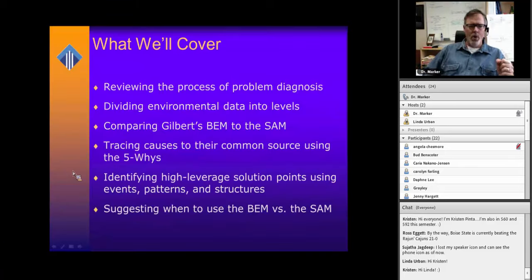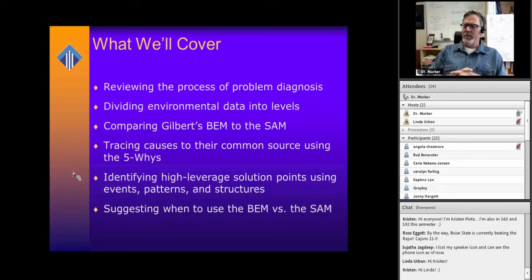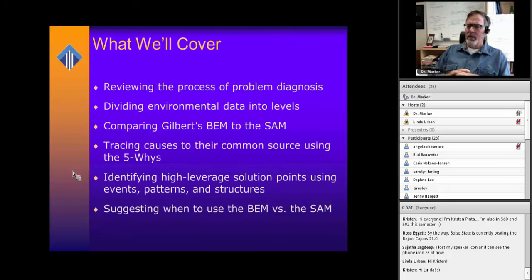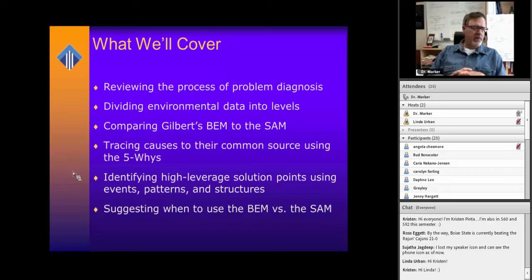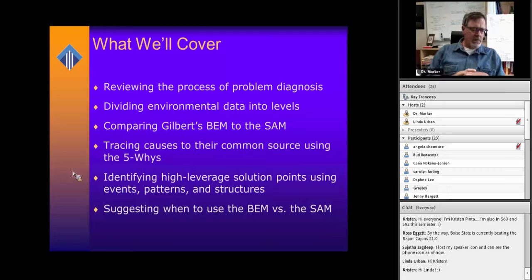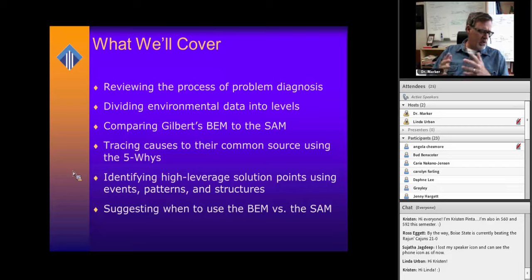Here are the things I'm hoping we'll cover today. We're going to review the process of problem diagnosis in general — this will be a review for almost all of you. We'll talk about dividing the environmental data into levels, then comparing Gilbert's BEM to the Synchronized Analysis Model, the SAM. After that we'll talk about tracing causes to their common source using the five-way technique, identifying high leverage solution points using events, patterns, and structures from systems analysis, and finally when to use the BEM versus the SAM versus some other model.